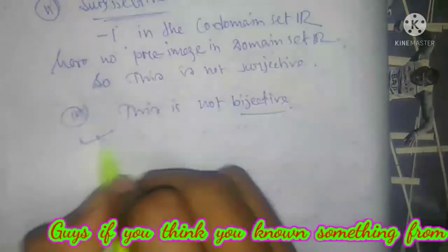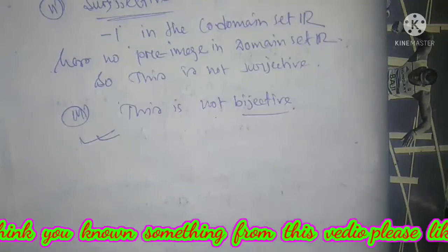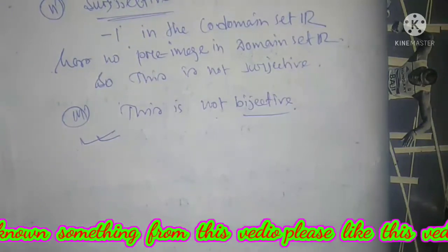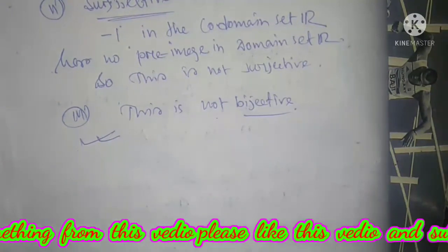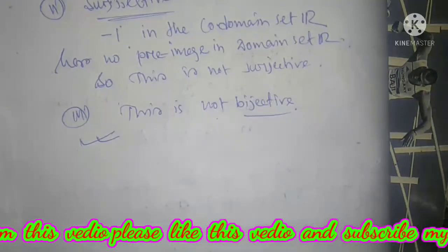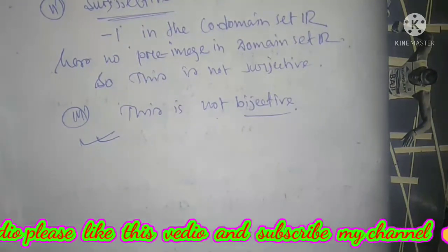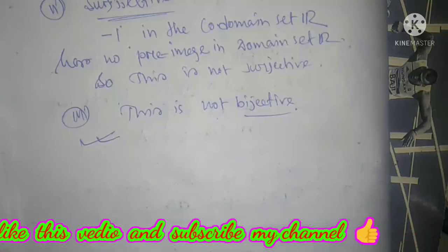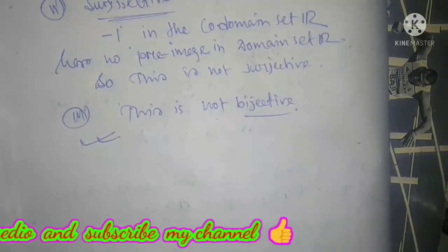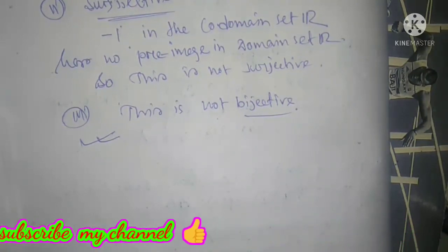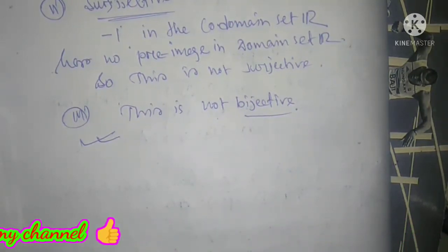So in the previous lecture we saw an example that was injective, surjective, and bijective. In this lecture we showed that f(x) = x² is not injective, not surjective, and not bijective. So we are done.